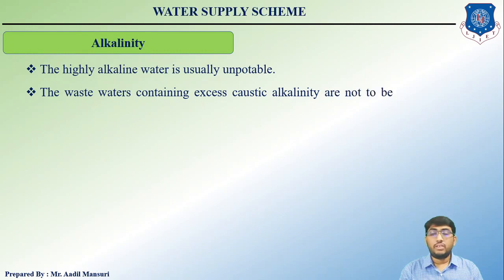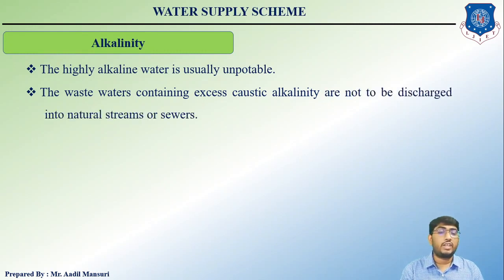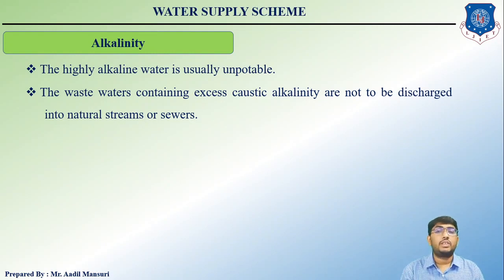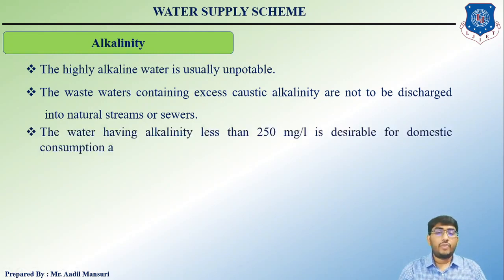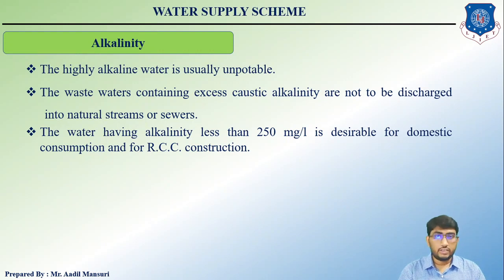Wastewater containing excess caustic alkalinity should not be discharged into natural streams or sewers as it hinders biological processes. Water with alkalinity less than 250 mg/L is desirable for domestic consumption and also for RCC construction.